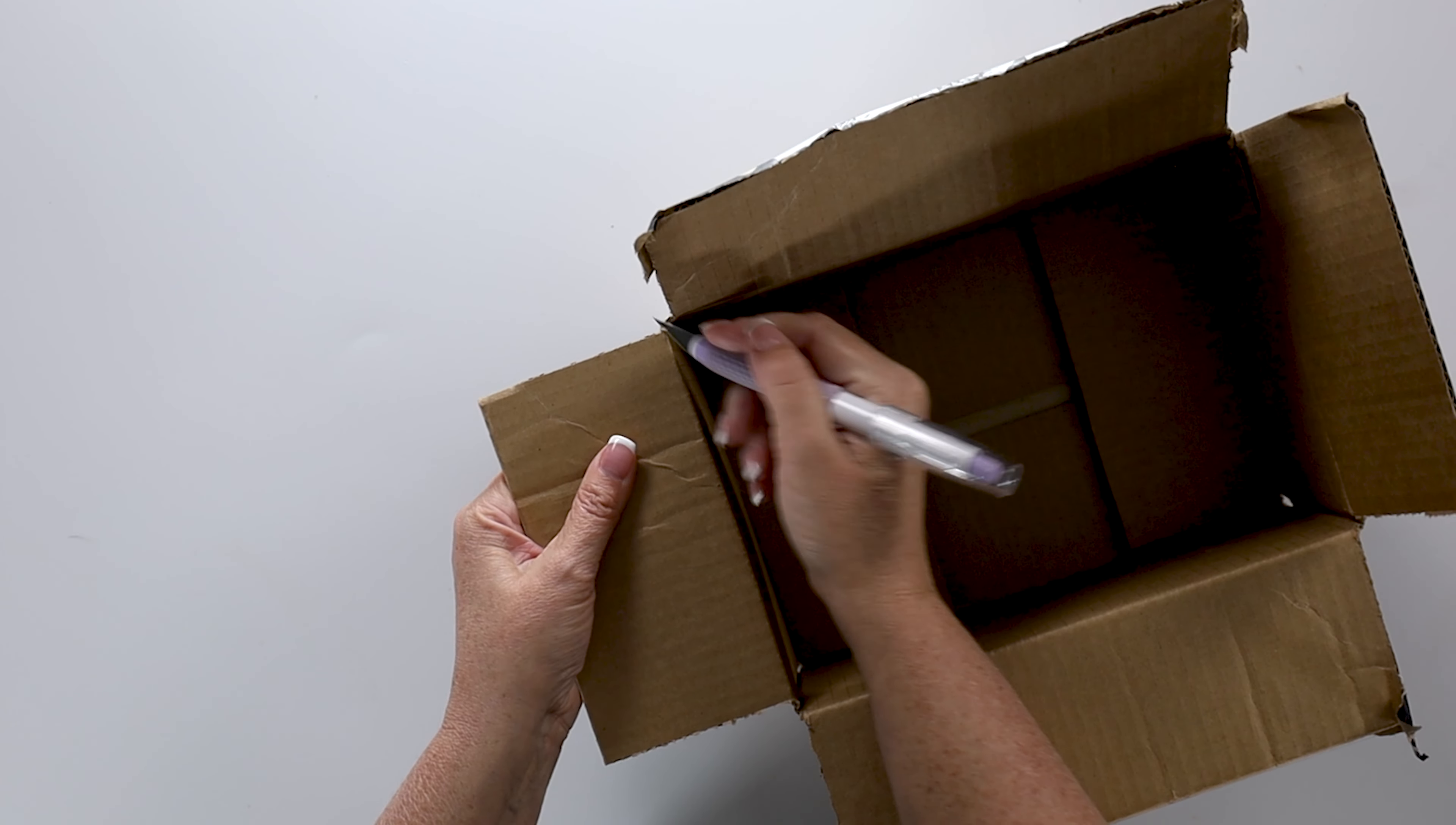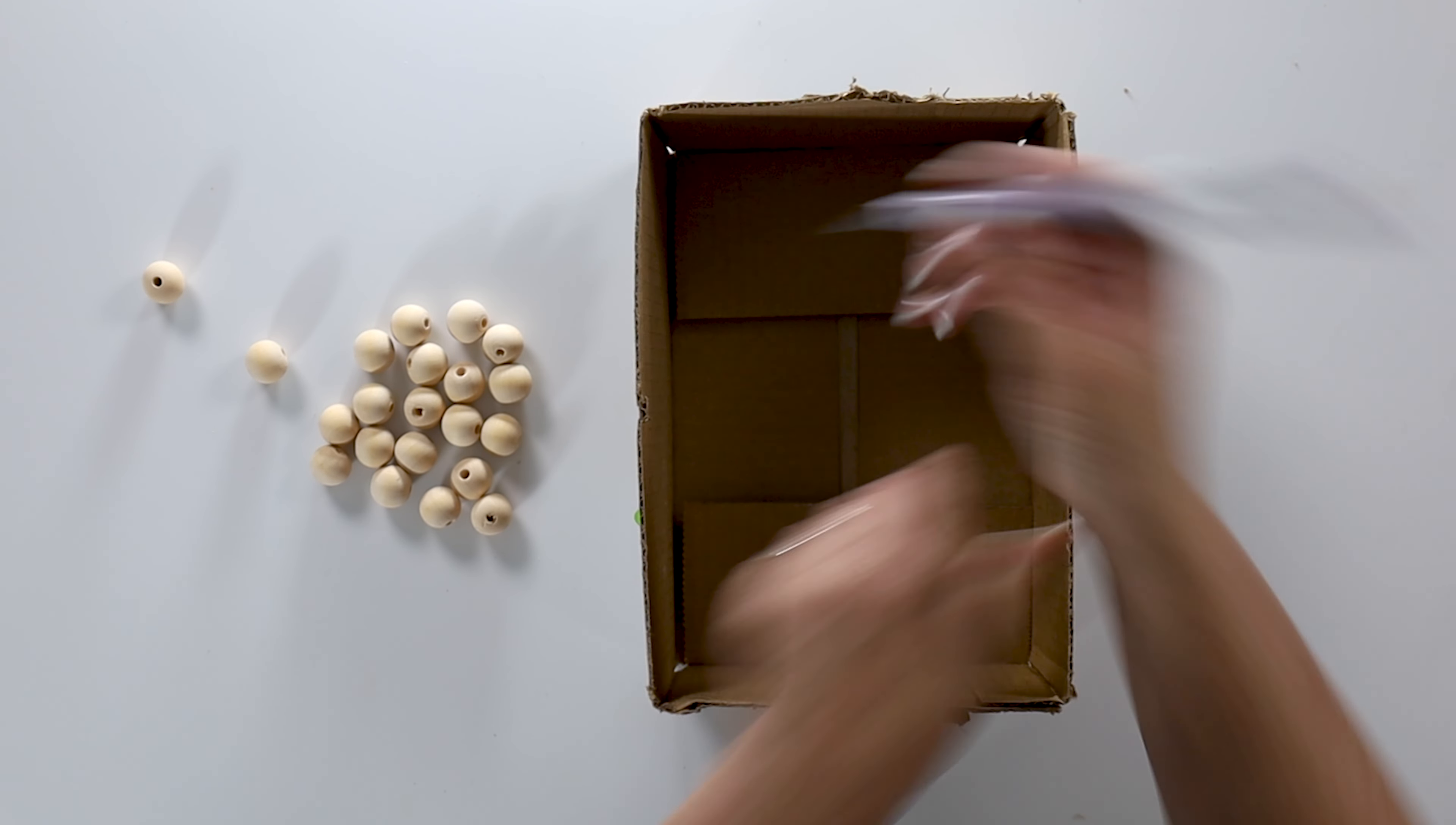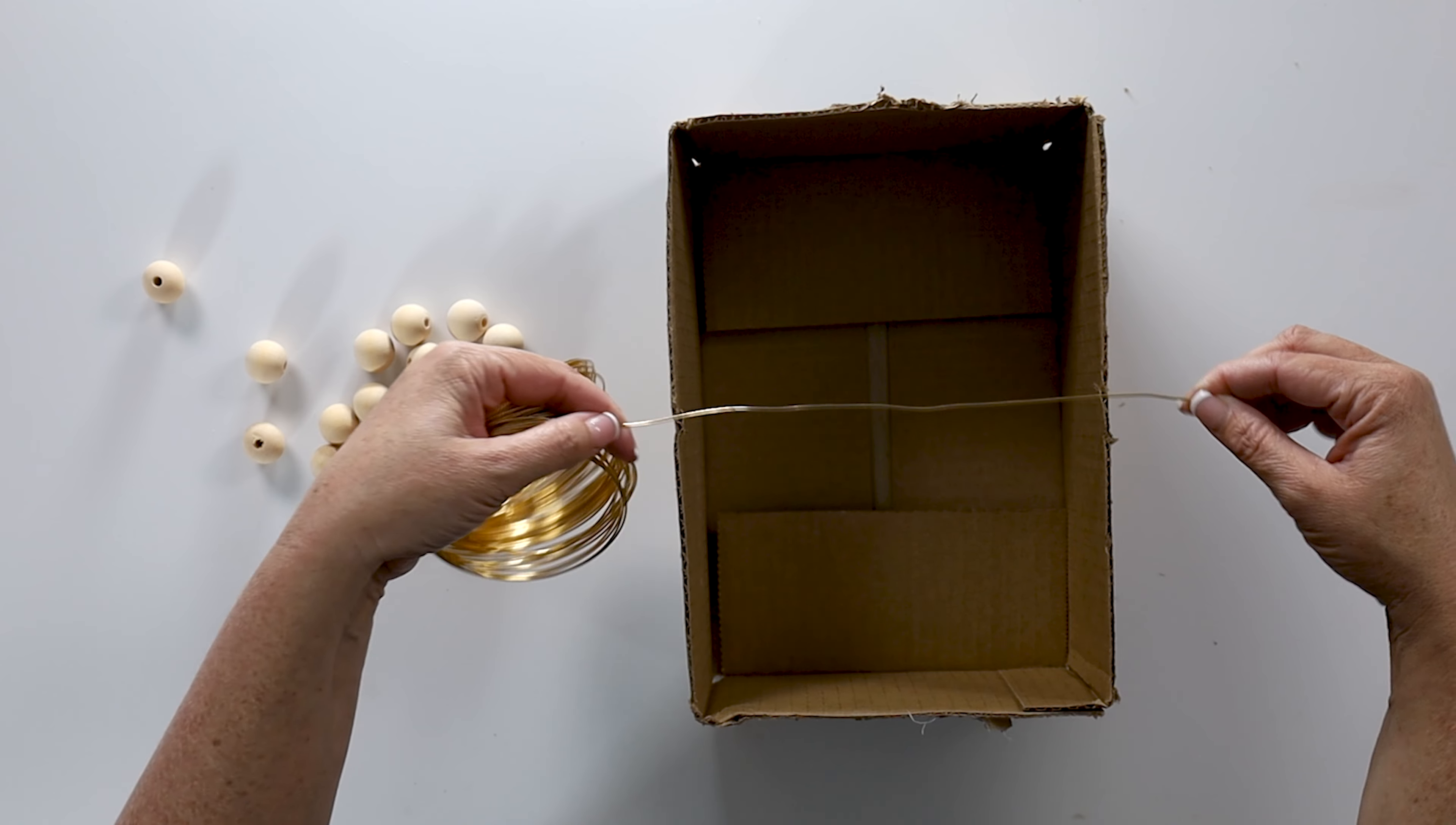I'm going to start by cutting off these flaps on our box. We don't need those, so I'm going to remove them. I can take my craft knife and cut some notches into the side of my box, and then I want to take my wire and cut it just a little bit larger than my box.